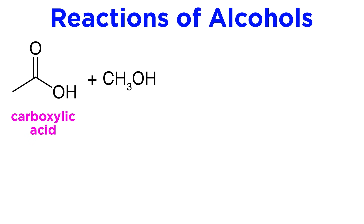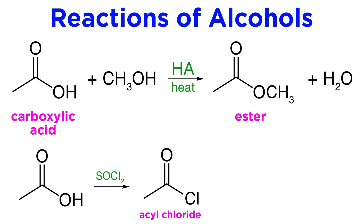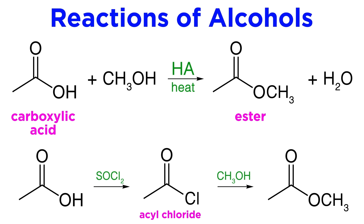Alcohols can react with carboxylic acids to form esters. This can be done in a single step using strong acid and heat, where something like methanol can coordinate to the carbonyl carbon, kicking off the hydroxyl and then deprotonating to give the methyl ester. A softer approach involves reacting with SOCl2 to give the acyl chloride. The enhanced reactivity of the acyl chloride over the carboxylic acid allows for reaction with methanol under milder conditions to give the ester by the same mechanism.